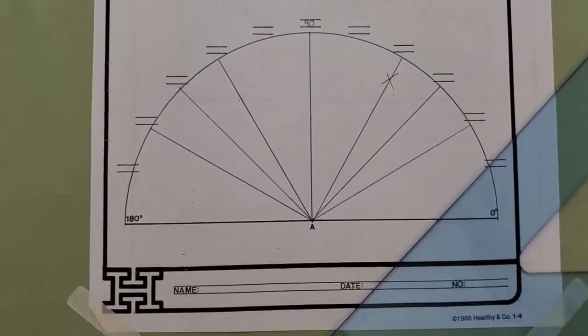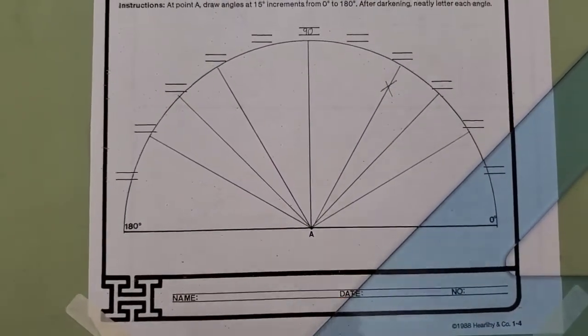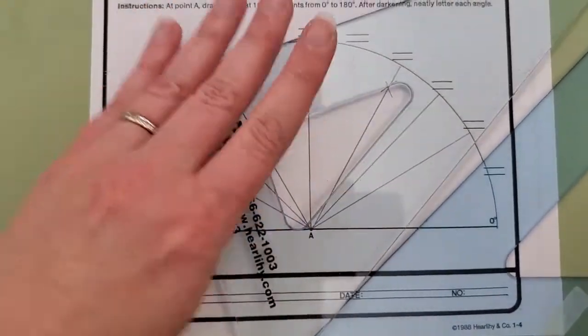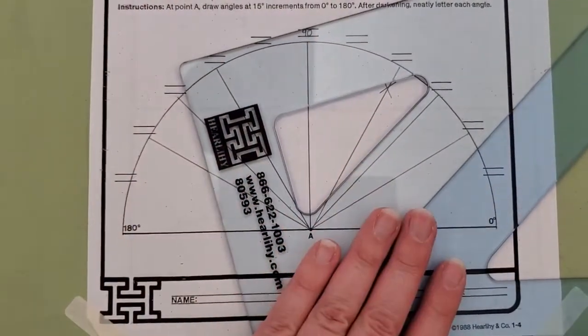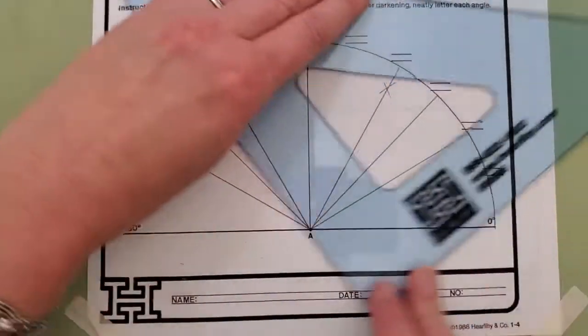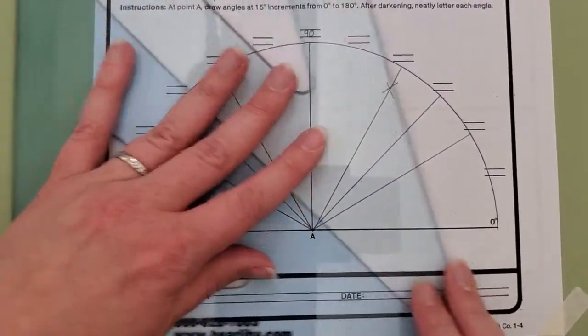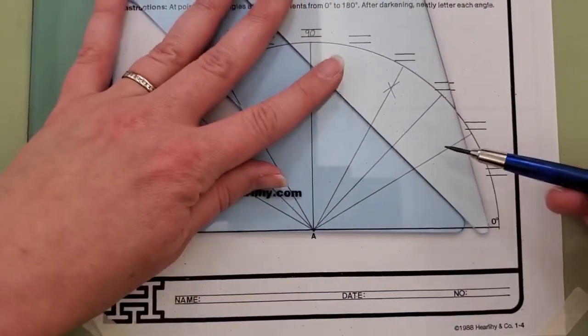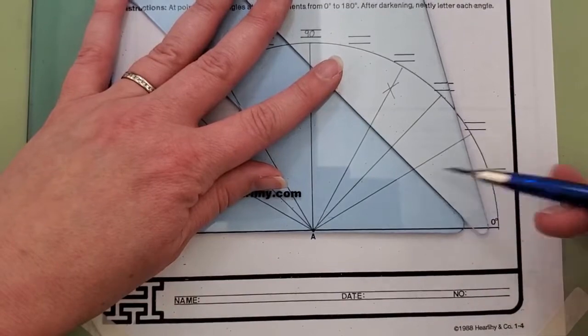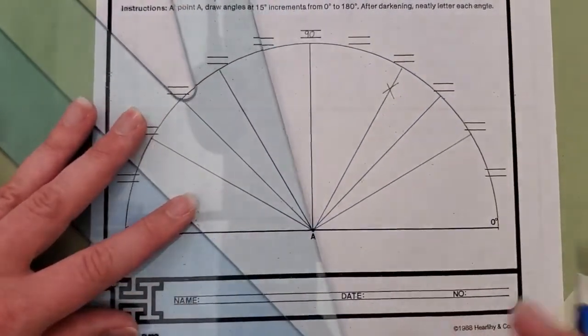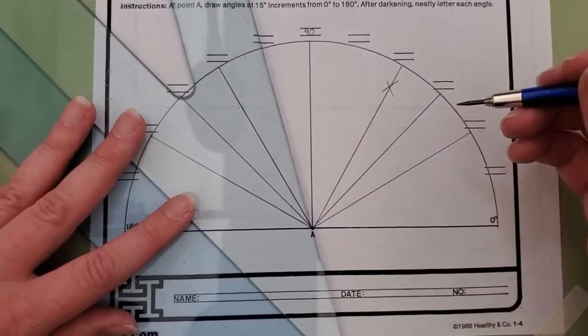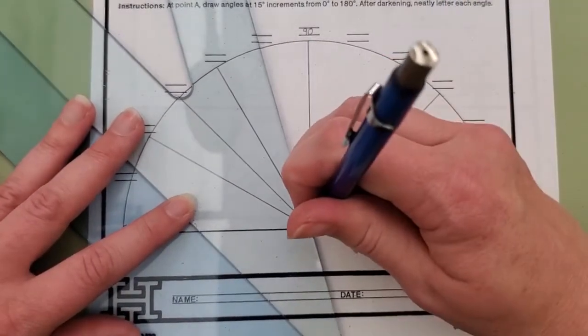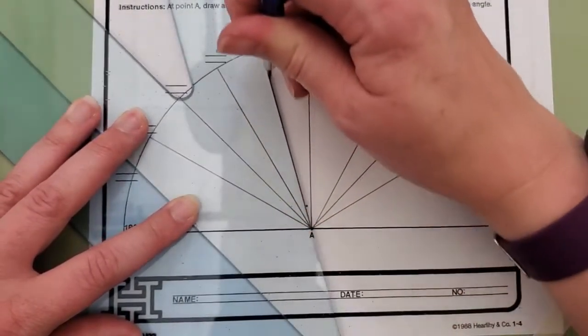I'm going to show you a couple of quick tricks involving your two angles. First of all, a 75 degree angle is when you add your 30 and your 45 together. I can use this to create a 105 degree angle by turning it in this orientation.